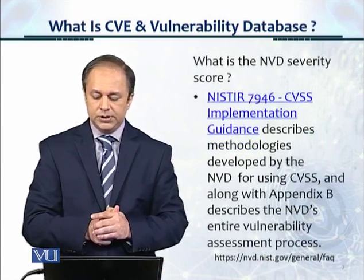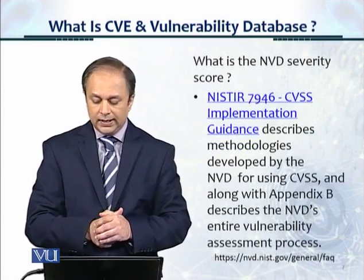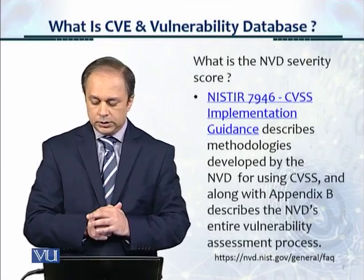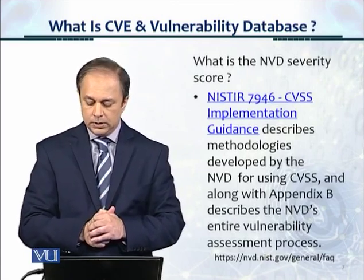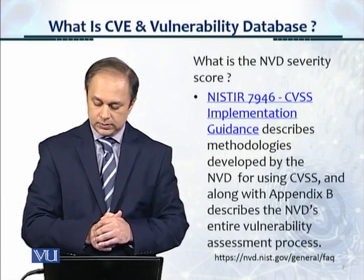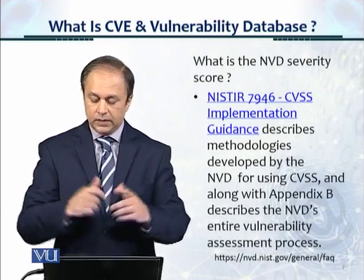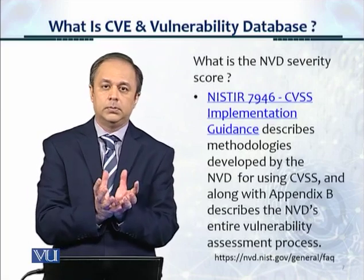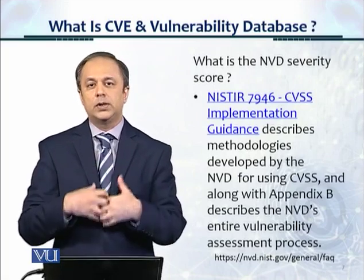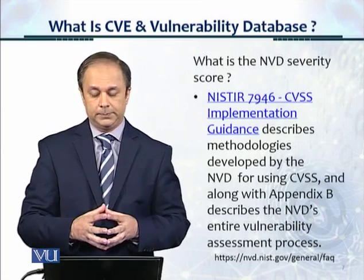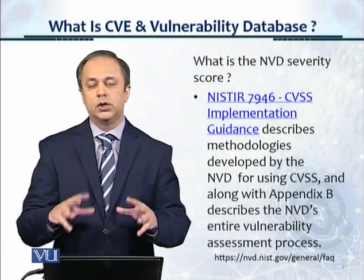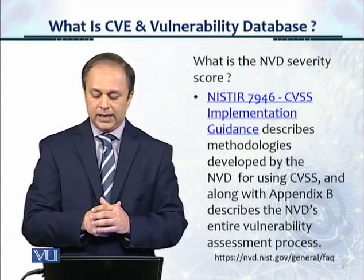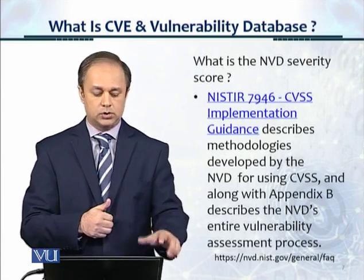NISTIR 7946, the CVSS implementation guidance document, describes methodologies developed by the NVD for using CVSS. Along with Appendix B, it describes the NVD's entire vulnerability assessment process. This describes CVSS as a scoring system which tells you the impact or criticality of a particular vulnerability. The higher the CVSS score, the more critical and the more impactful it is. You can look at the NISTIR 7946 CVSS document for details on how the scoring system is developed.